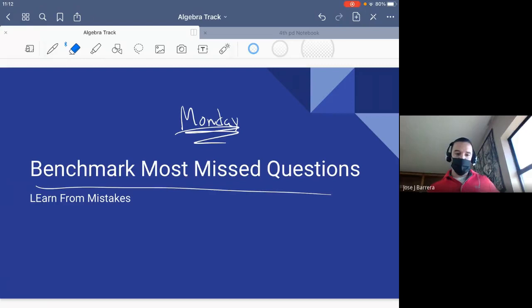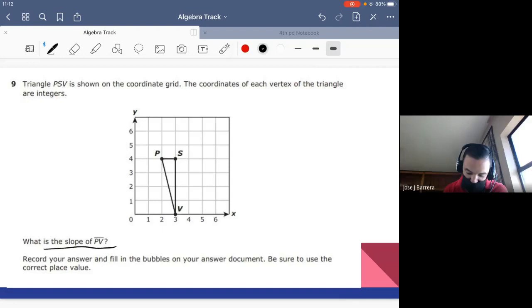Okay, we're going to be doing an end puzzle on the benchmark most missed questions. So it's very important that we learn from our mistakes, and these are the eight questions that I saw most students got wrong on the benchmark that we just took last week. One of the questions was, what is the slope of PV? Question number nine.